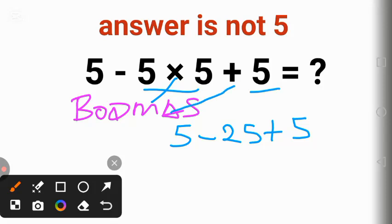The next is addition. 25 plus 5 will give us 30, so we have 5 minus 30. And finally we have subtraction.